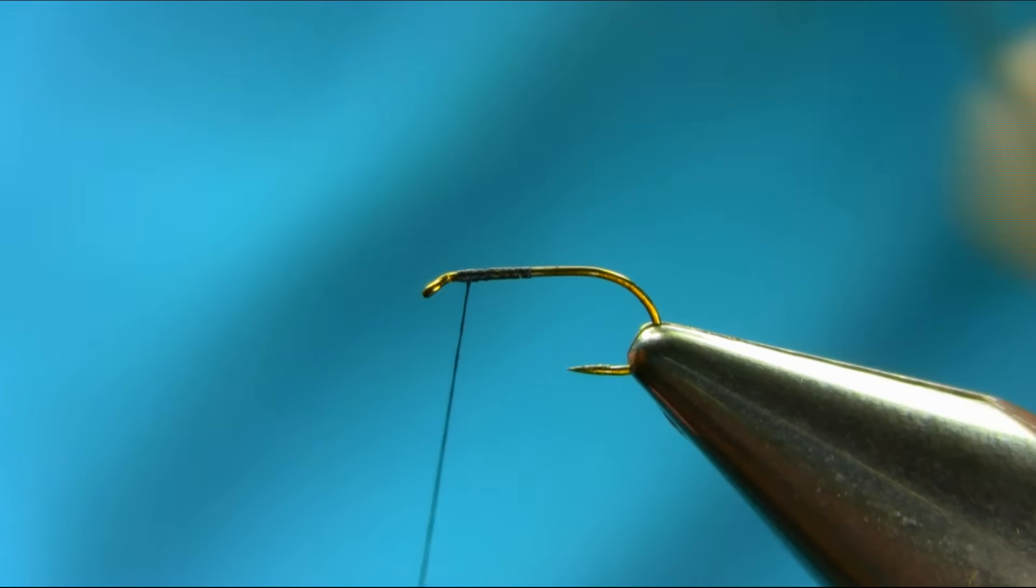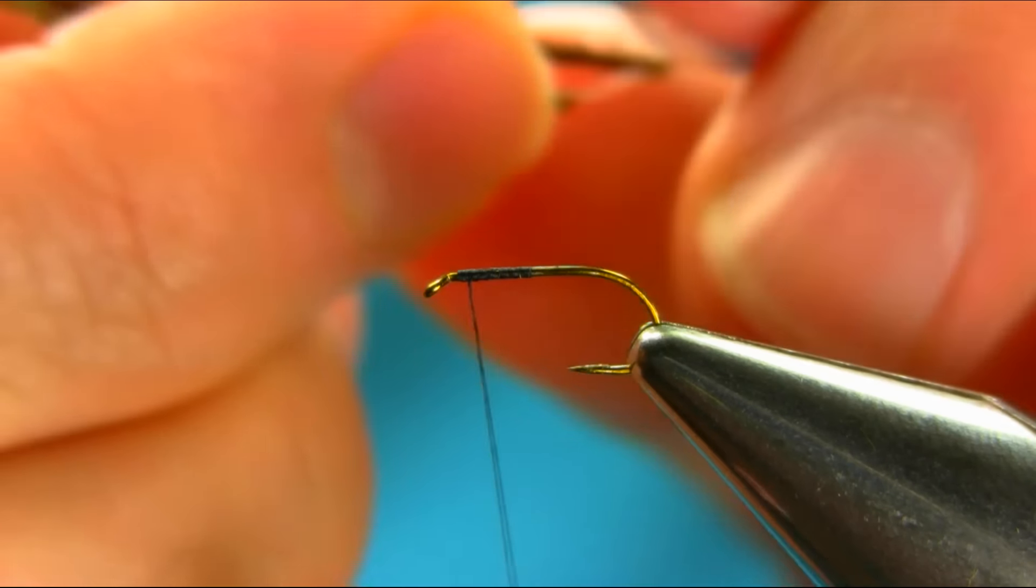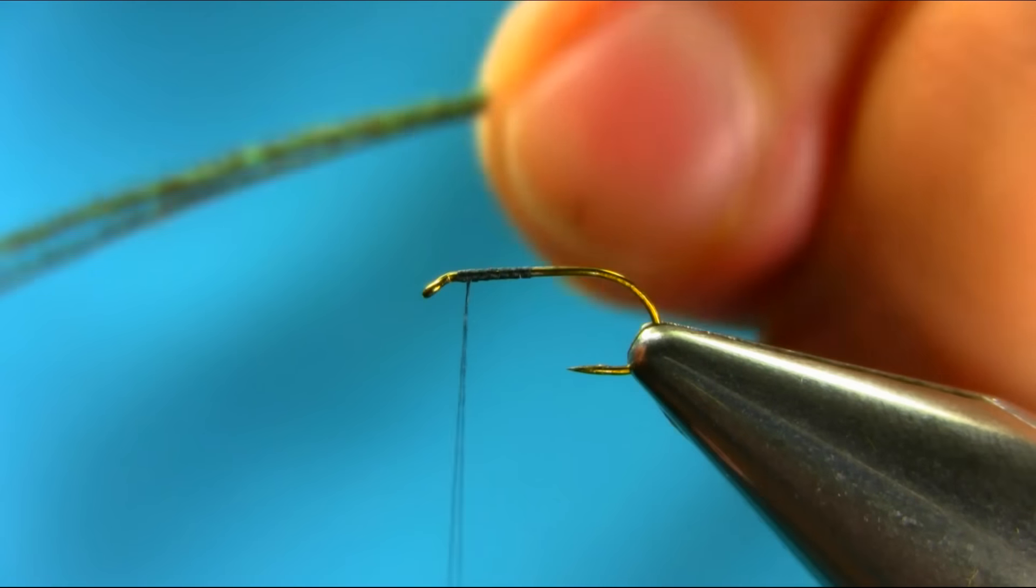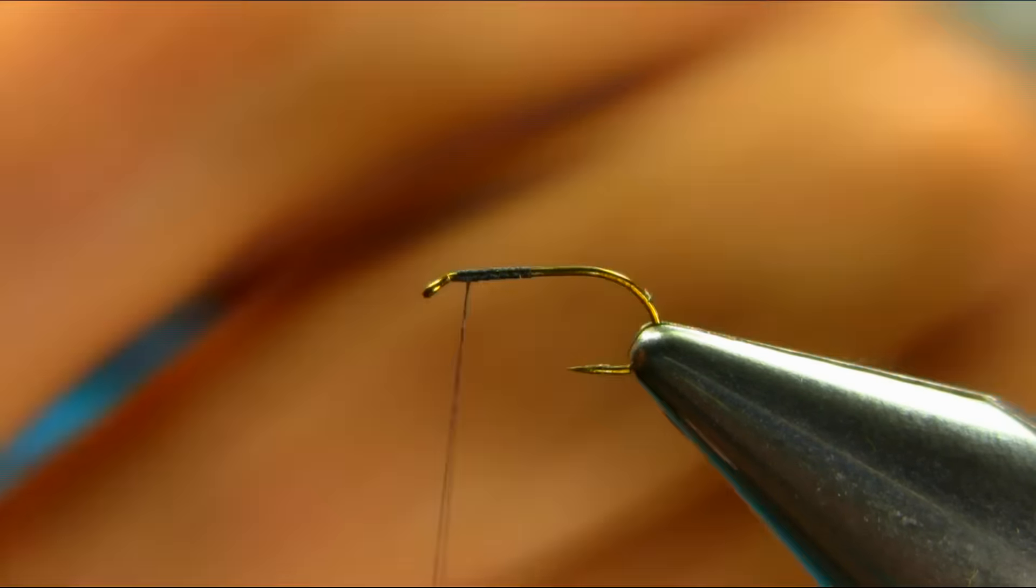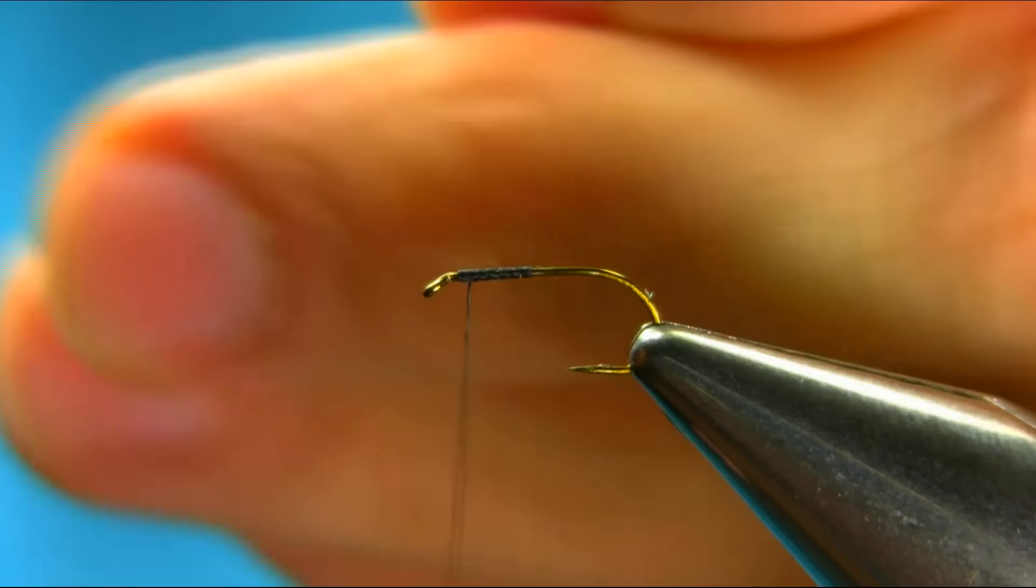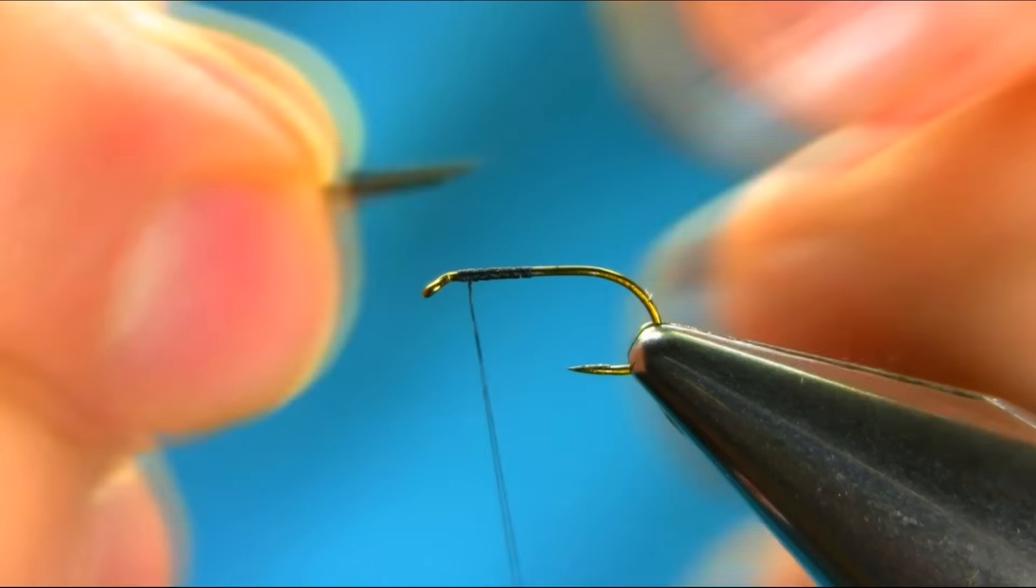You need two strands of peacock hull, so just take this tip off and then catch them.